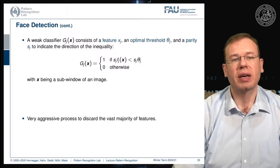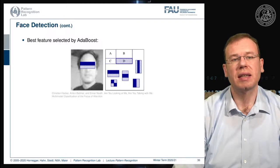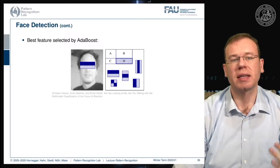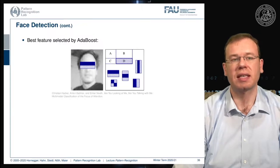This is a very aggressive process to discard the vast majority of features and allows you to build a boosting cascade. Interestingly, you can look at the best features selected by AdaBoost — work by colleague Christian Hacker — and you see that the one feature selected virtually always is a patch over the eyes and the nose, just subtracting two integral image values. This is a very good predictor for faces, with some additional classifiers then needed to confirm them.